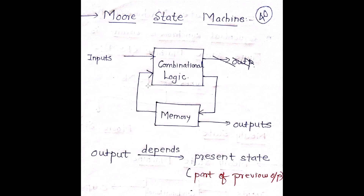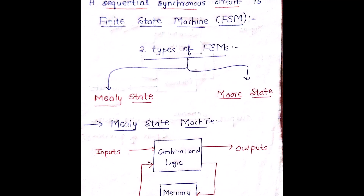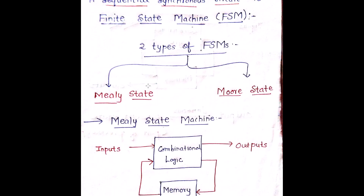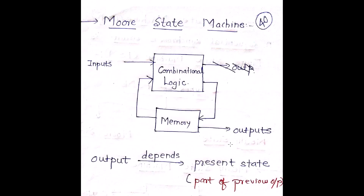Just to summarize: a finite state machine or FSM is a sequential synchronous circuit. There are two types of finite state machine — one is the Mealy and the Moore. The Mealy output depends upon the present input and the present state, which is the part of the previous output. The Moore state machine depends upon only the present state, which is the part of the previous output — not on the present input.